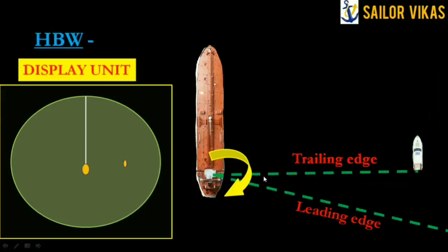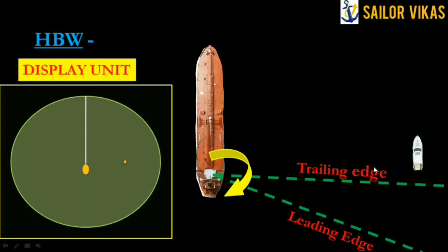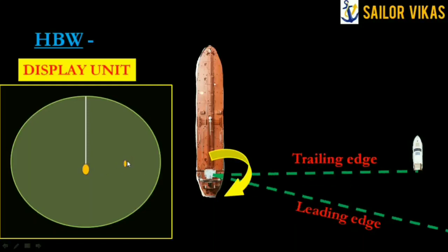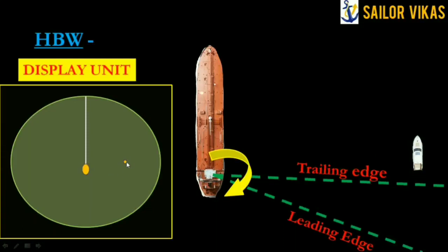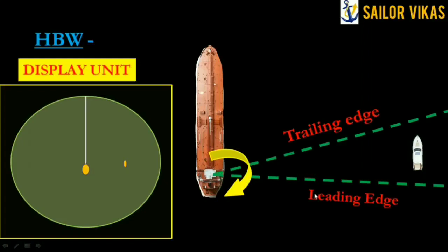As soon as the trailing edge leaves the target, the enlarged paint reduces back to the actual size of the target. So as the trailing edge departs, the bigger paint becomes smaller and returns to the target's actual size. That is the concept behind horizontal beam width.